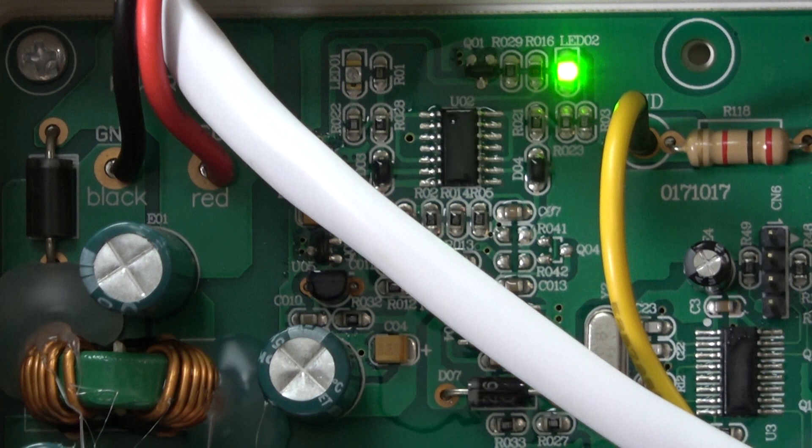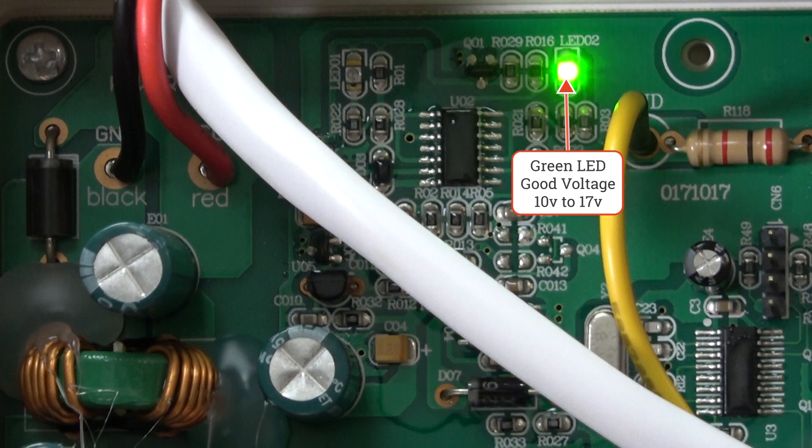So we have a green LED. What that means is that we have 10 volts all the way up to 17 volts.